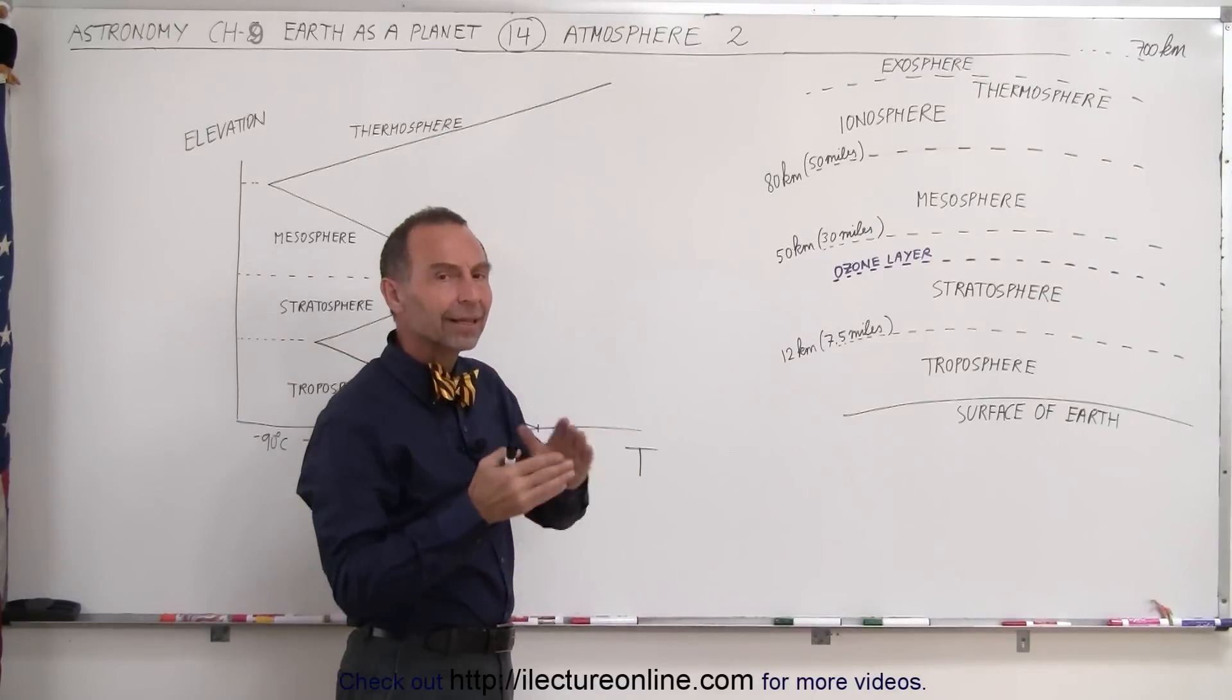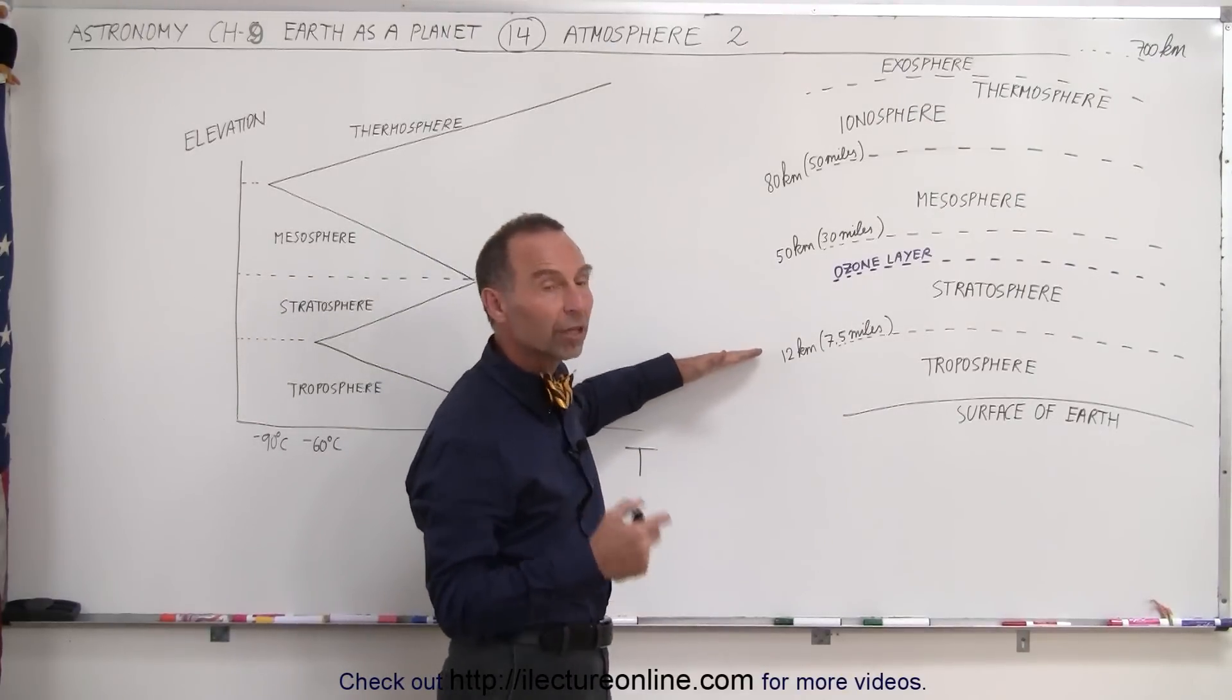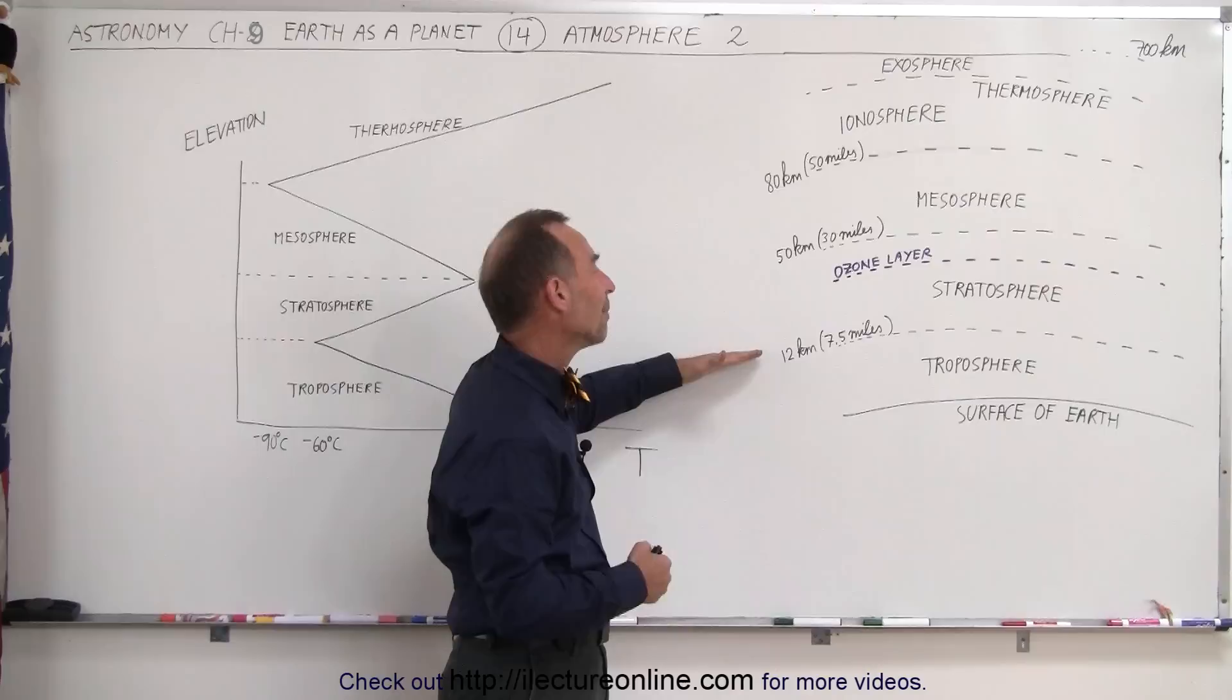Here you can see the approximate thickness of each layer. The troposphere starting at the surface of the Earth goes up to about 12 kilometers, which is about seven and a half miles up.